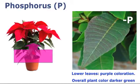Typical symptoms first appear on the older or lower leaves. With cool growing conditions, the leaves develop a purple colorization. The plants may also have an overall darker green colorization.